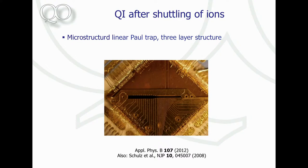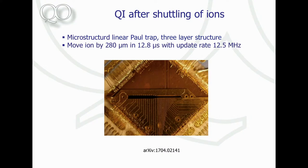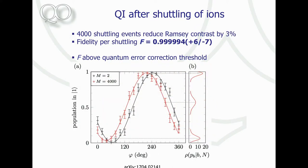This has been done with a different trap — a three-dimensional pole trap, a microstructure trap with many electrodes. We move the ion typically by 280 micrometers, which is a rather large distance for an ion. If you think of an ion with a diameter of about an angstrom being moved 280 micrometers, that's like moving a human from here to Rome across bumpy roads. We do this about 4,000 times, and then measure the coherence using a Ramsey-type interferometer.